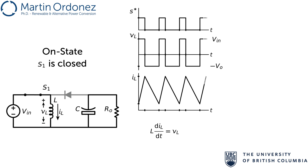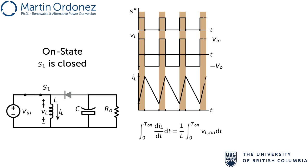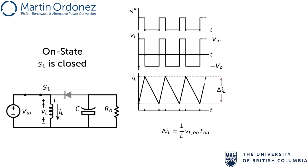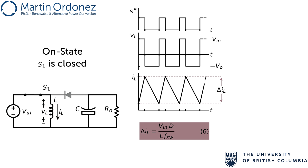If the inductor equation is integrated during the on time, since the voltage is constant, the amplitude of the inductor current ripple is found to be equal to the voltage during the on time, times the length of the on time, scaled by the inductor value. Plugging in the value of the inductor voltage during this time, V_in, and the value of the on time — the duty cycle times the switching period — and then replacing the switching period by one over the switching frequency, the amplitude of the inductor current ripple is found as a function of the converter parameters. This equation can be used to find the ripple in the inductor current, or it can be arranged to select the inductor value for a given desired current ripple.